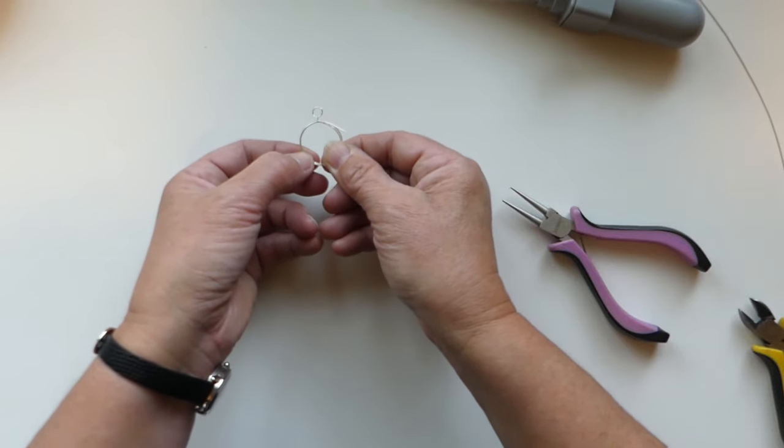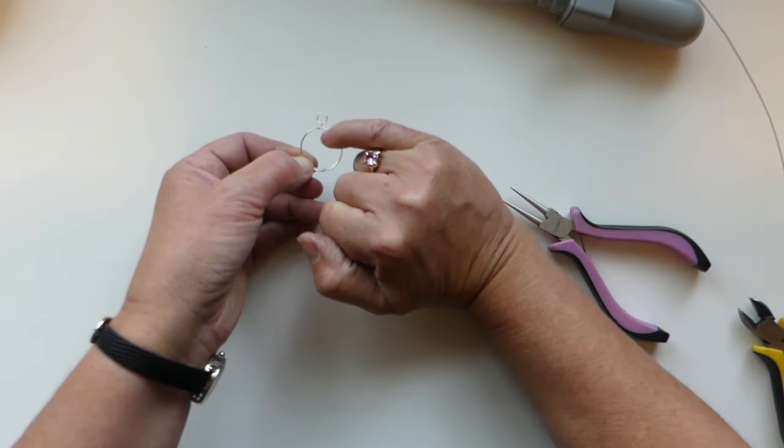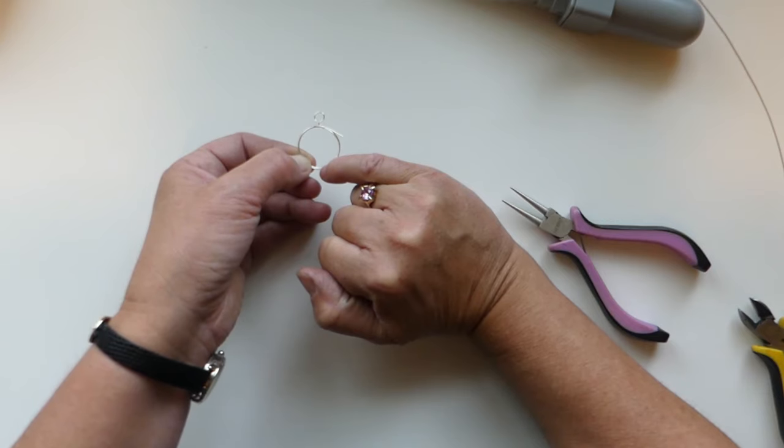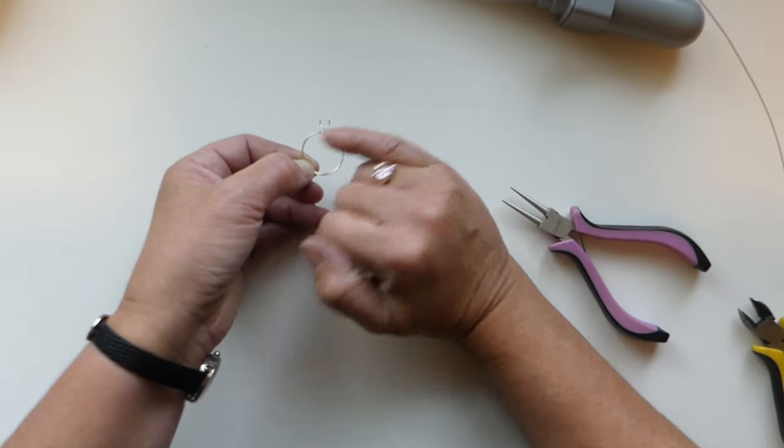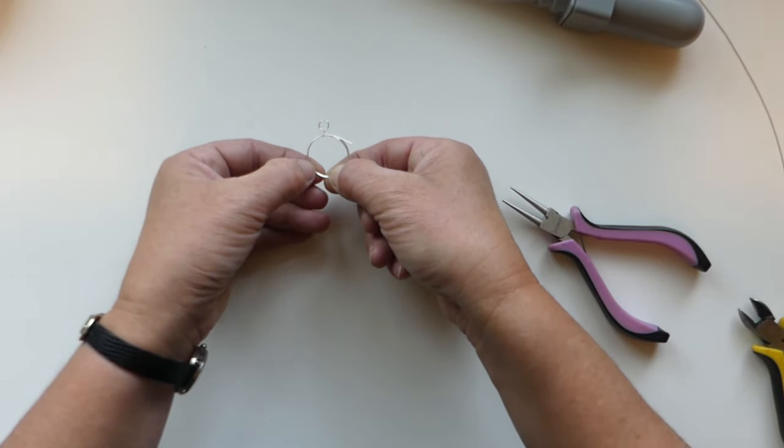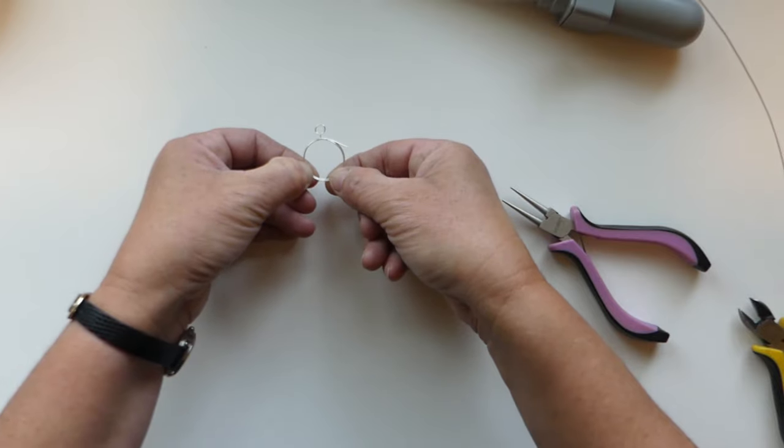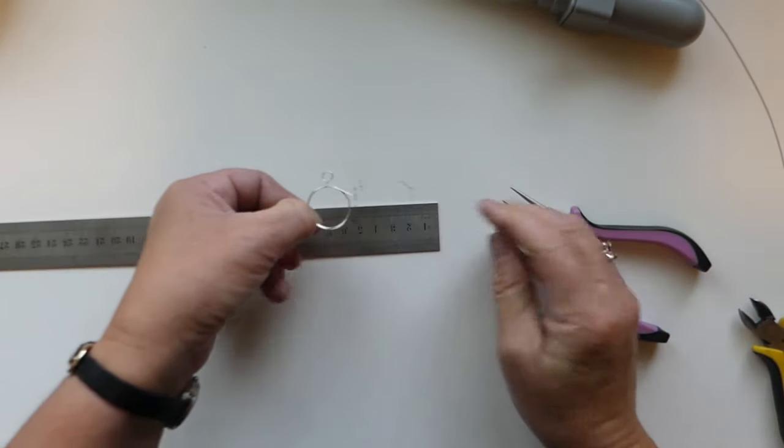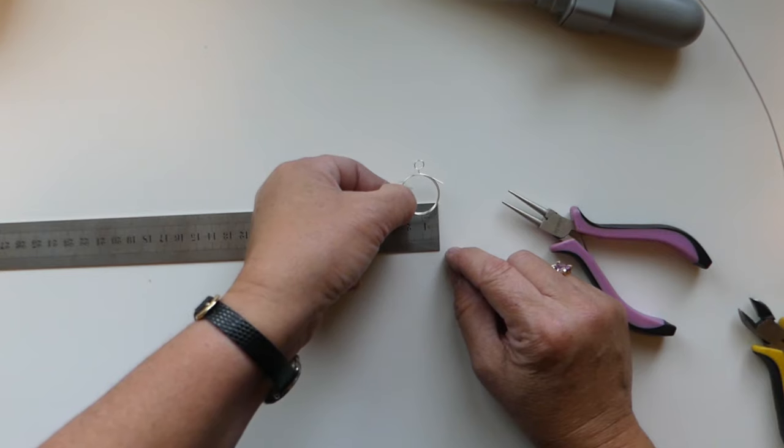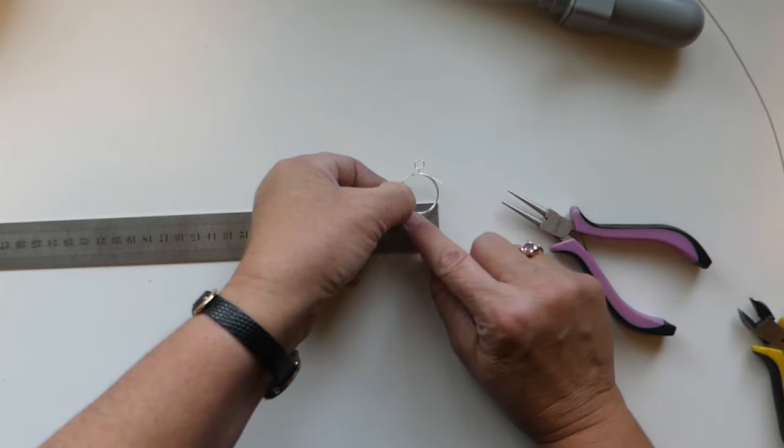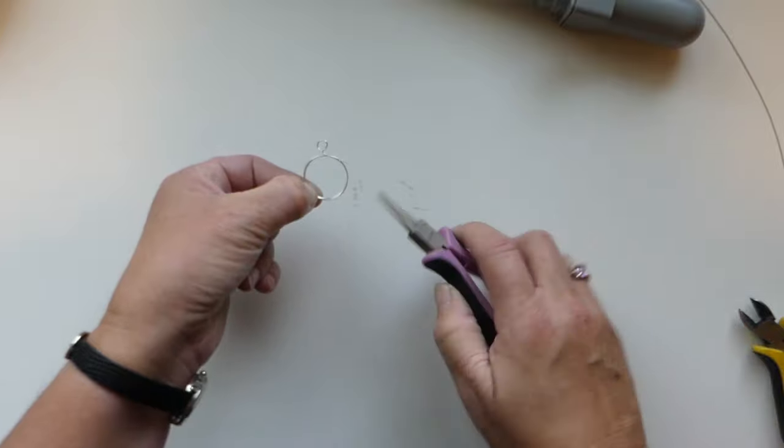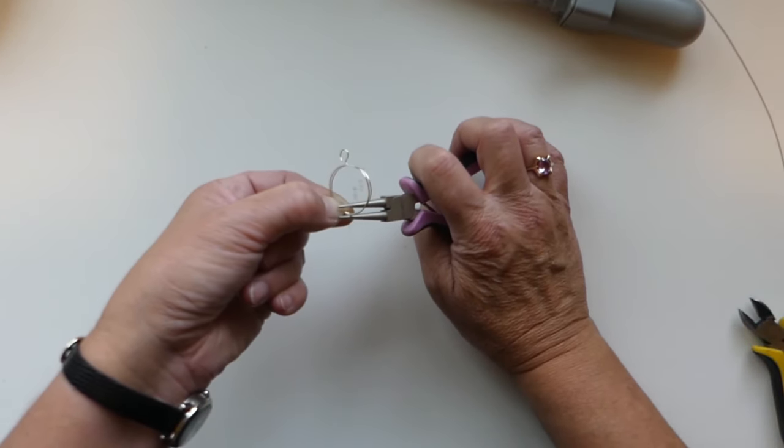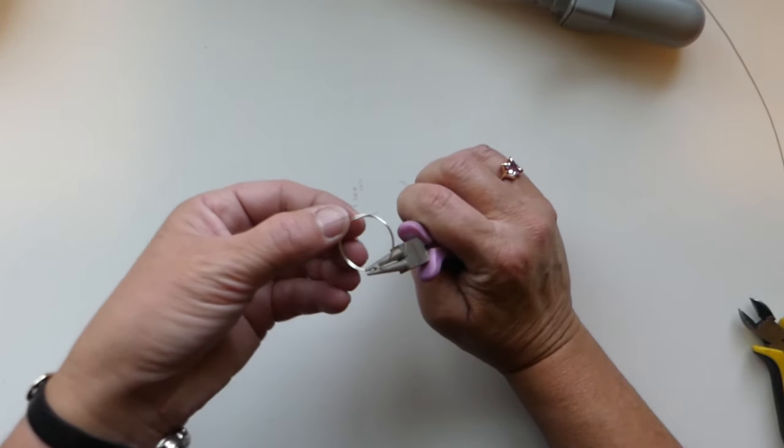And then what we're going to do - make sure that it's nice and tight, nice and parallel - we're going to determine where the center of this ring is, and then we're going to go just a little bit to the left of that, I'd say probably about half a centimeter is what we're looking at here. And then we're going to take our round pliers and we're going to hold on to making sure that this is nice and tight, these circles are even.